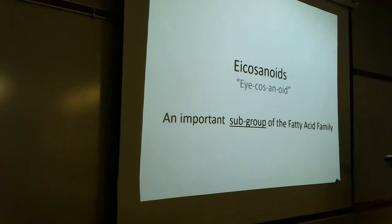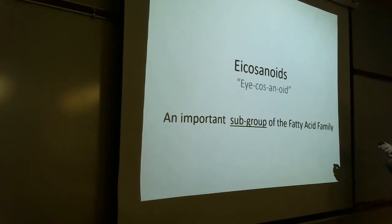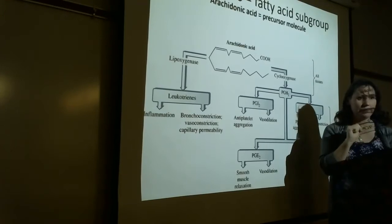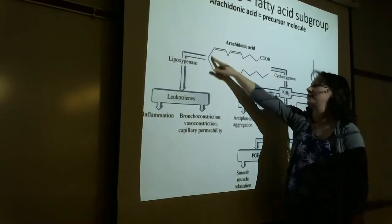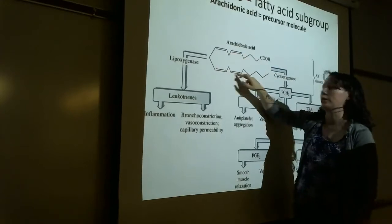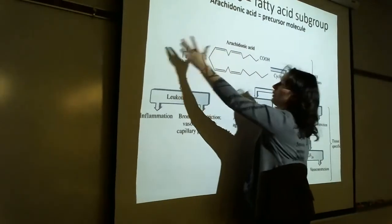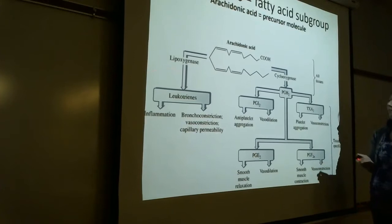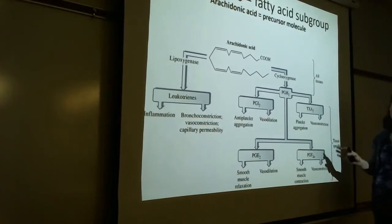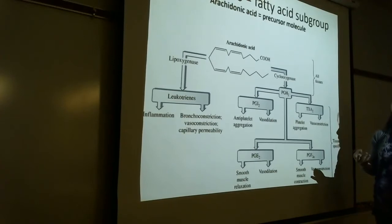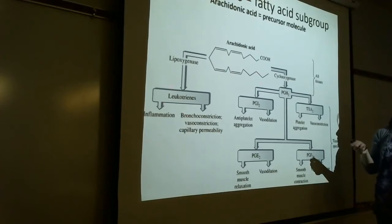Now let's talk about a subgroup of the fatty acids called the eicosanoids. One of the ways we talk about fats is by their parent molecules. Arachidonic acid is the precursor for all eicosanoids — it's a carboxylic acid drawn bent on itself with four double bonds. Eicosanoids have many roles in the body.